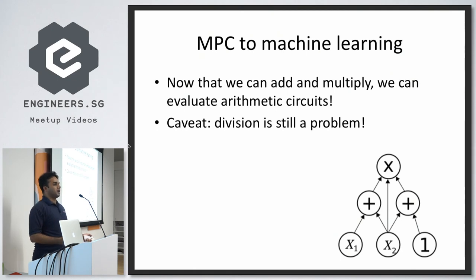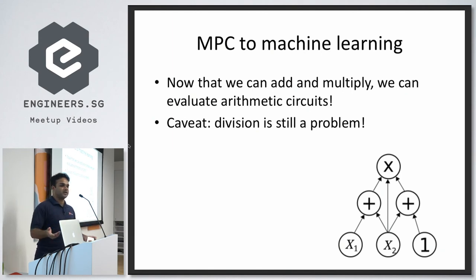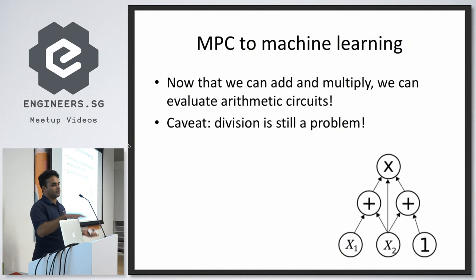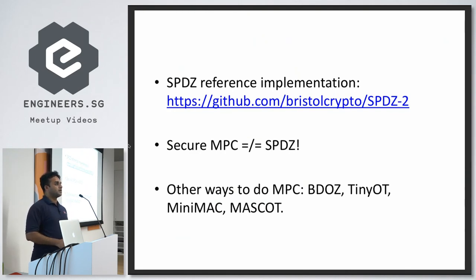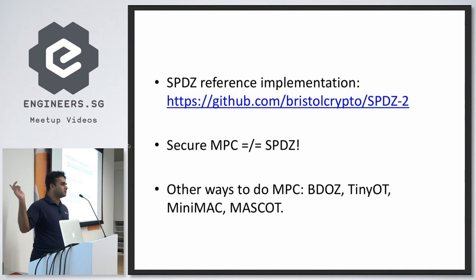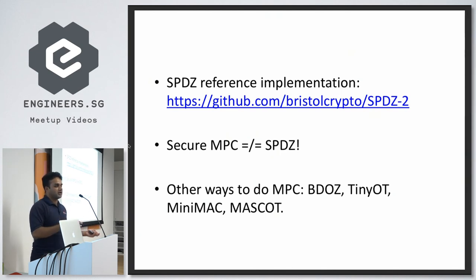Now that you can add and multiply, you can evaluate arithmetic circuits. The remaining challenge spotted earlier — you can't do division — is where the machine learning aspect of crypto-ML comes in. You have to modify your ML algorithms to work and be private even when division operations are not private. Here is a reference implementation for the SPDZ protocol; there are multiple other protocols listed as well, and depending on your ML algorithm it might be easier to use one of the others.